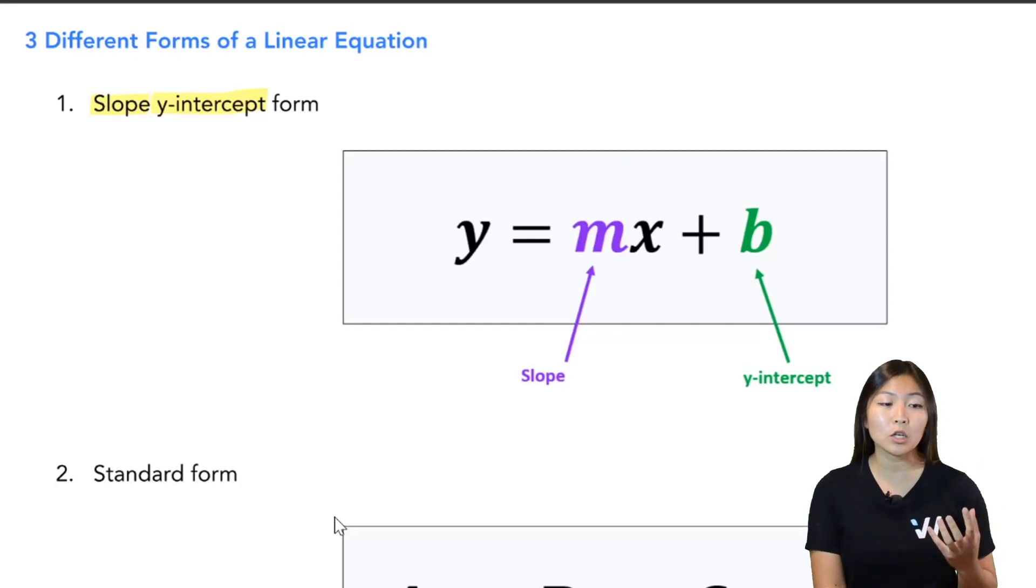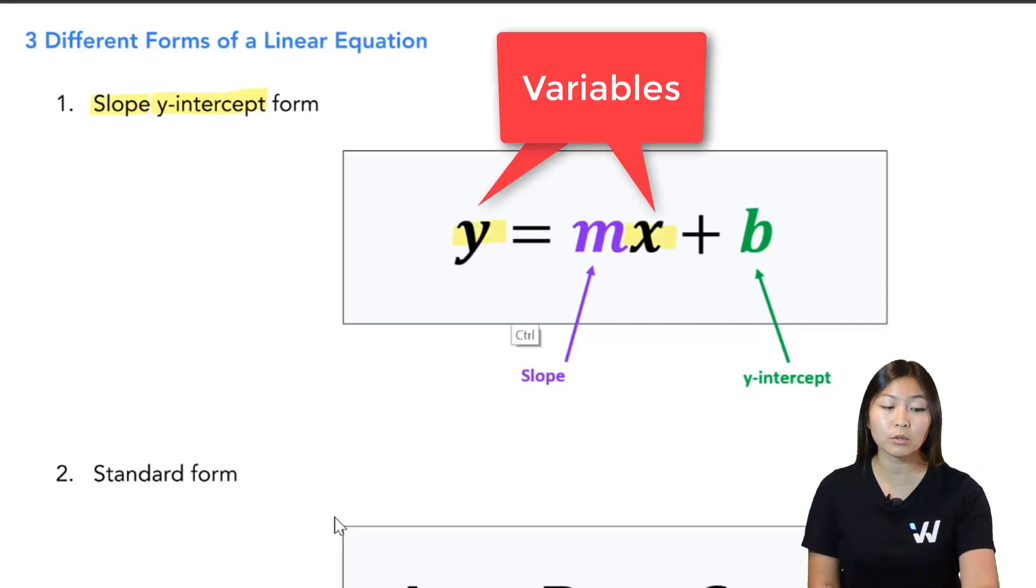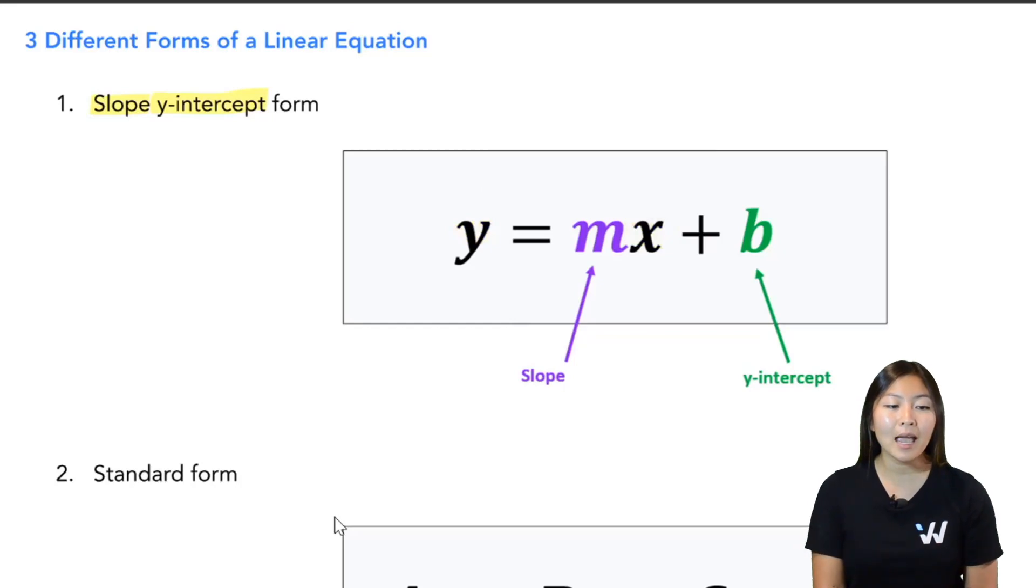Now be very careful. In this equation, x and y, these are variables, so they're going to stay as x and y. But the m and the b, these are numbers. So this m is a number and this b is also a number.